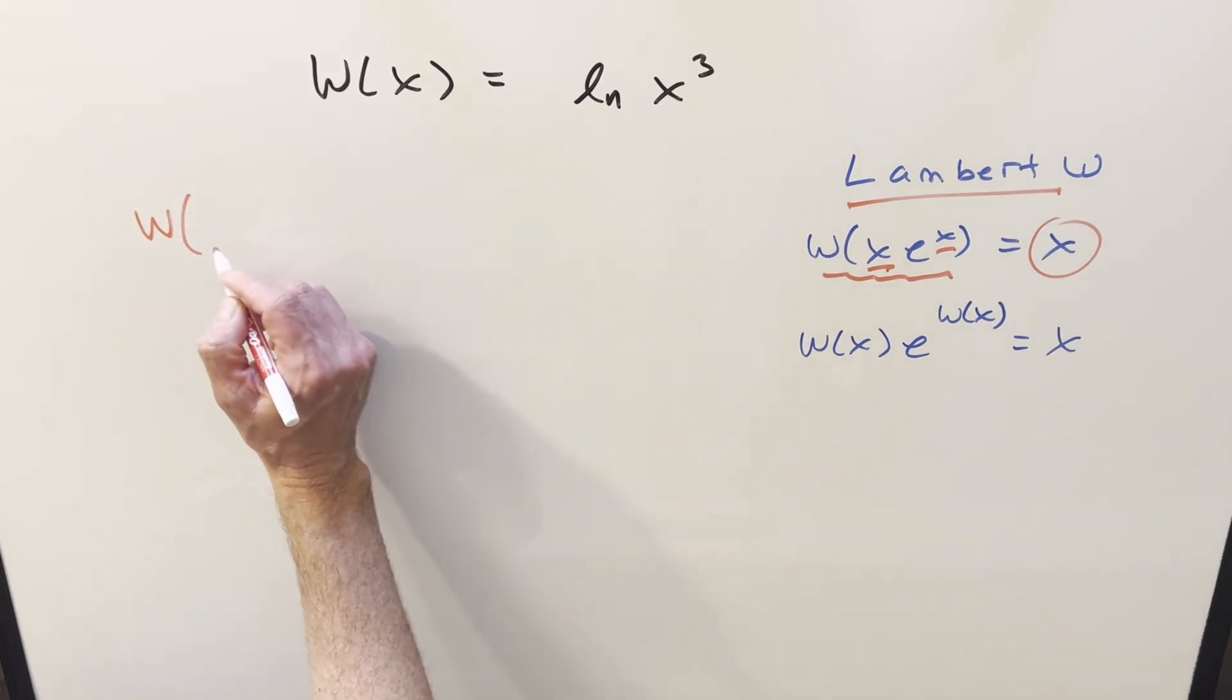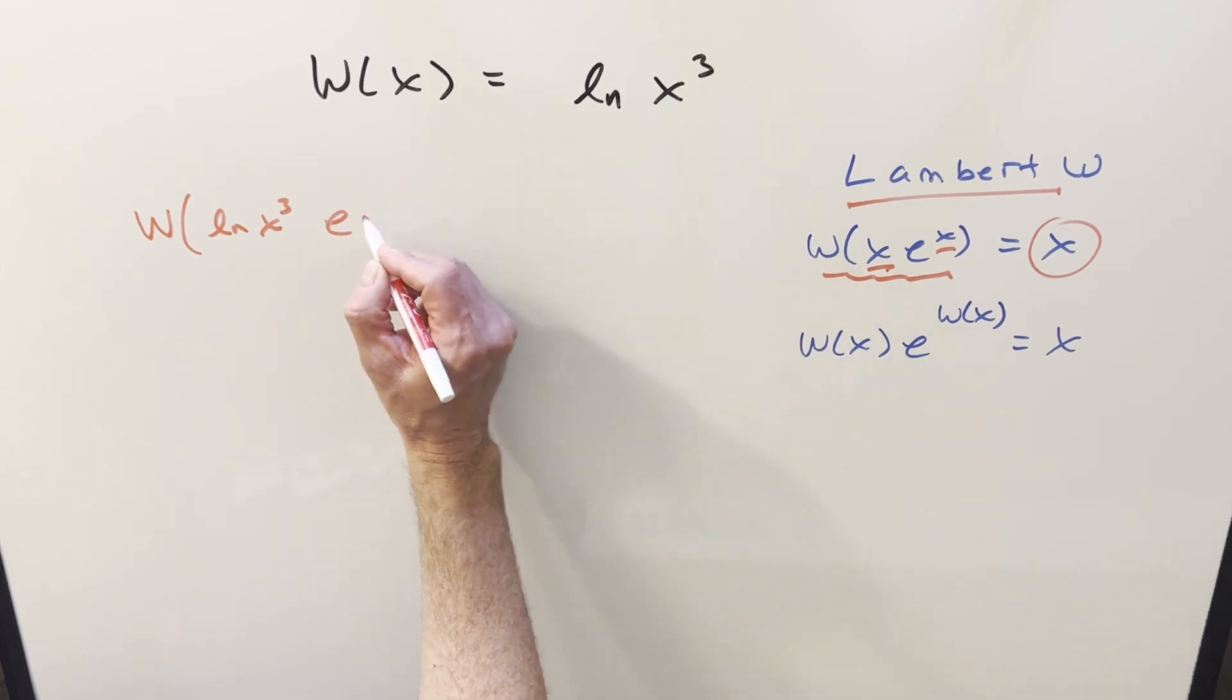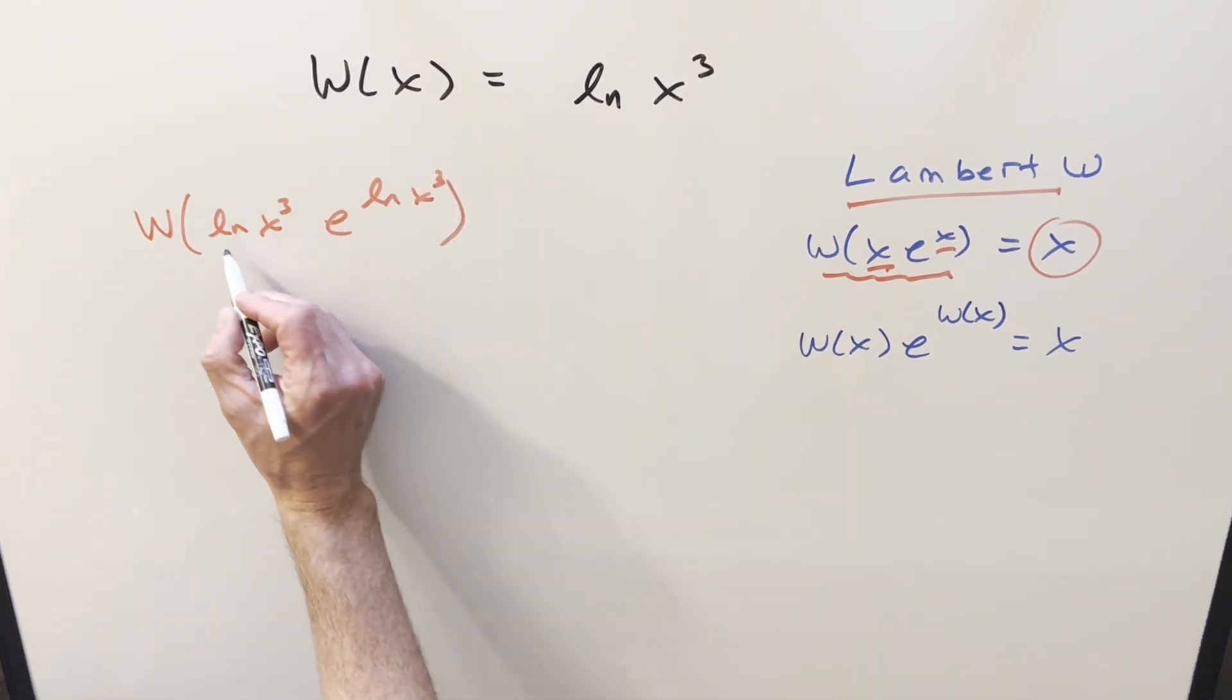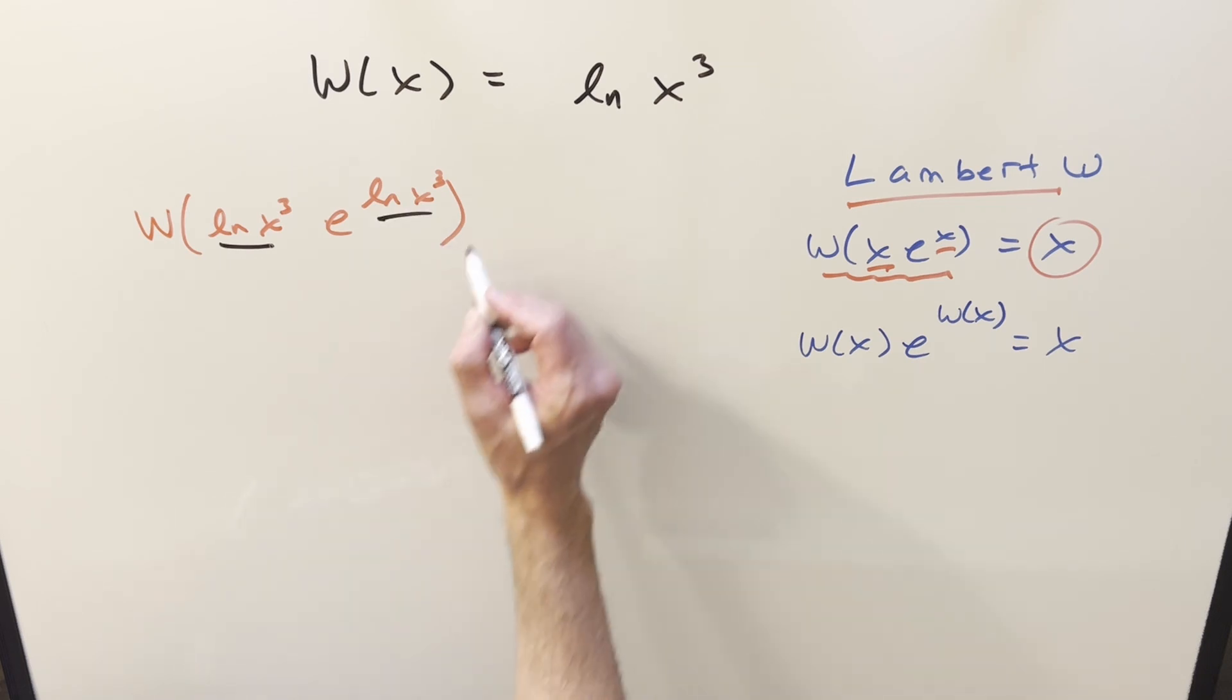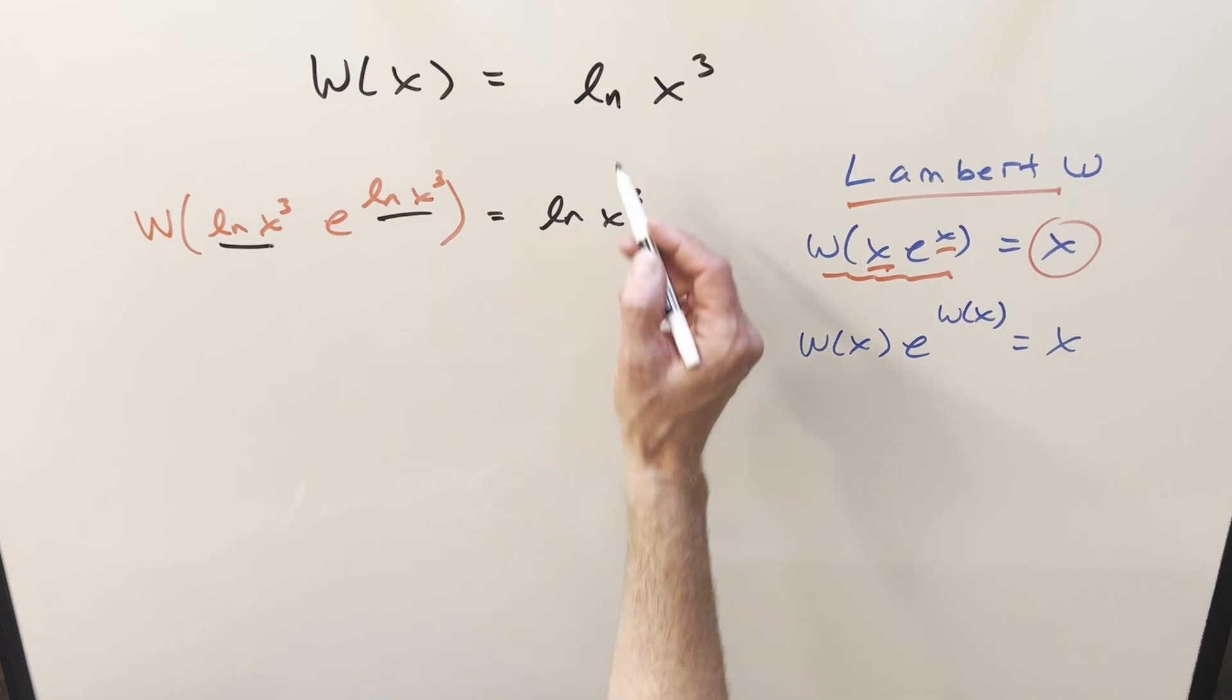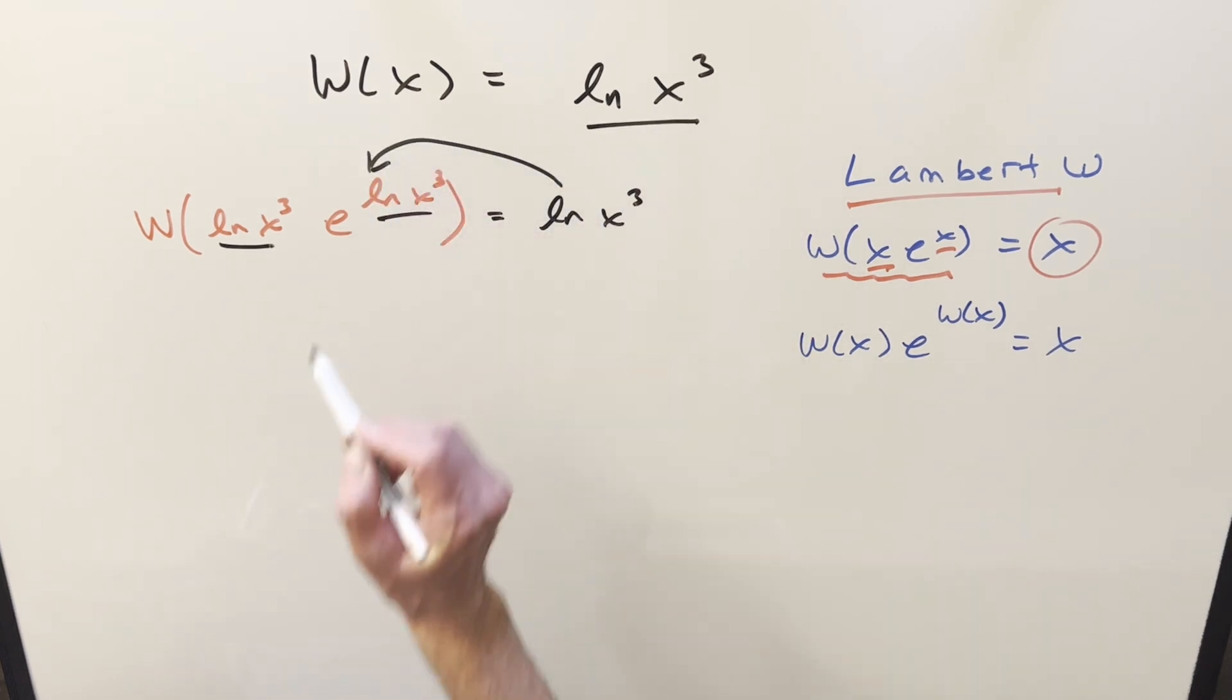If I create something like Lambert W of x cubed, just using this, and we set it up like this, well, in this we've got the same coefficient, the same exponent, so this we know is going to be ln x cubed. So what I can do for the right side of our equation is I can replace it with all this right here.